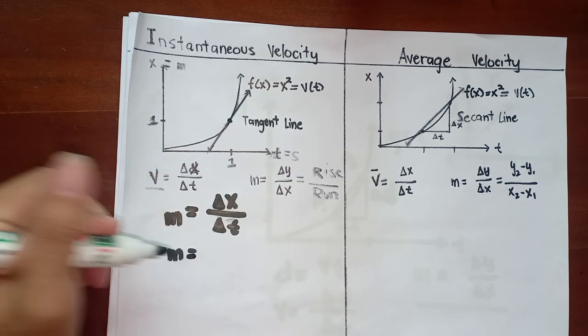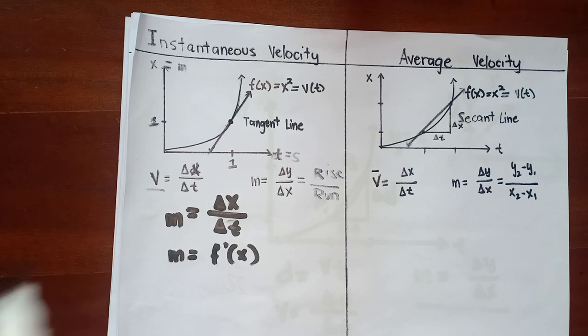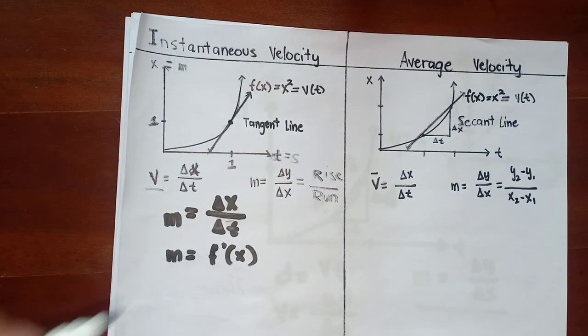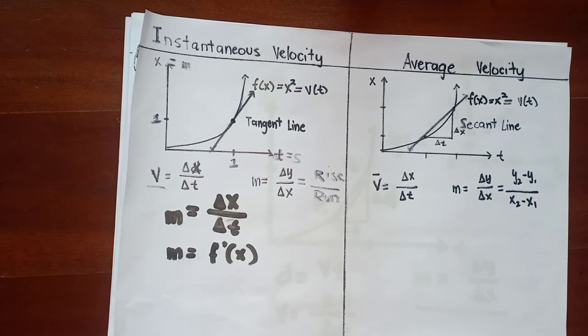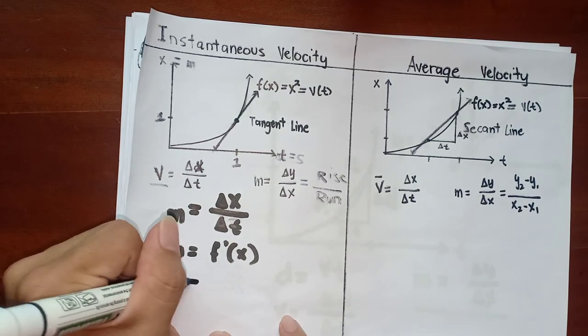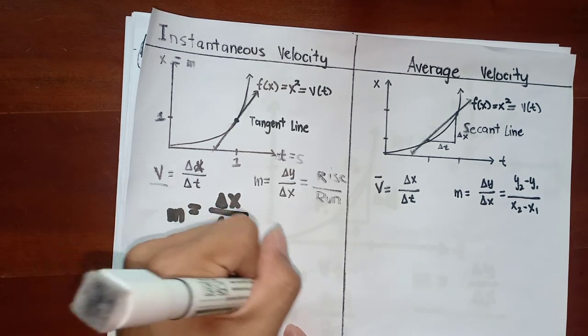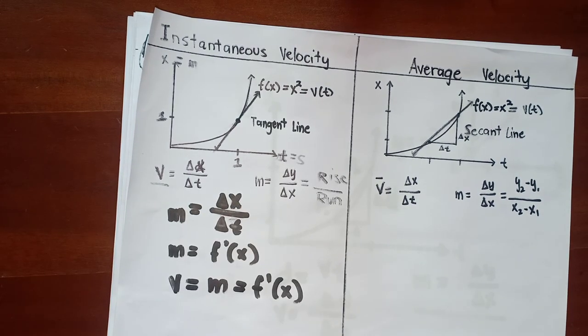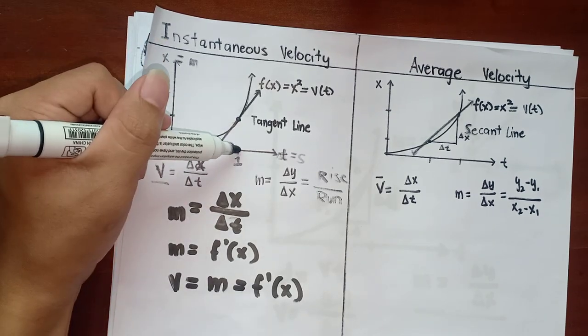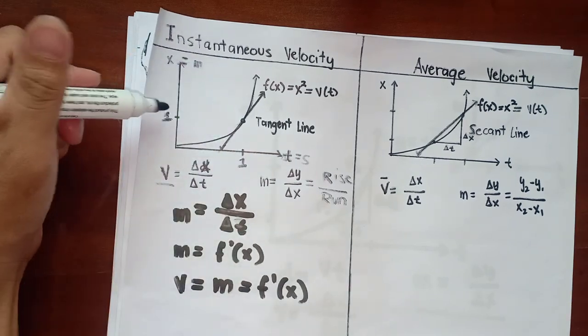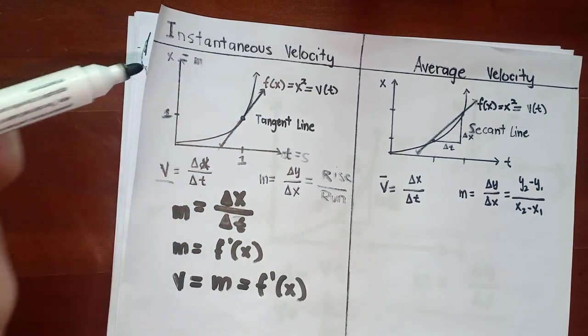The slope is also equal to the derivative of a function. The derivative of x squared equals the slope of this. In general, in conclusion, the instantaneous velocity equals the slope of the tangent line and also equals the derivative of the function. This is instantaneous, within a point. There's only one x, one time, and one distance, so meter per second.